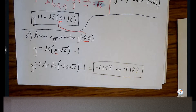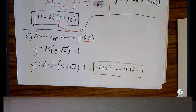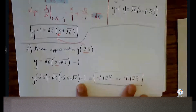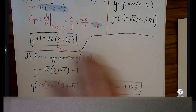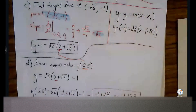Number two on worksheet two is very much the same type of problem: solving the differential equation, getting the particular solution, solving for C, solving for Y, tangent line equation, and linear approximation. I'll skip number two, but you're welcome to work on that as additional practice later. Let's go to number three on the second page of worksheet two — we're just going to do parts A and B. C, D, and E are more connected with previous units, so I'm just going to focus on what we need for the test review.